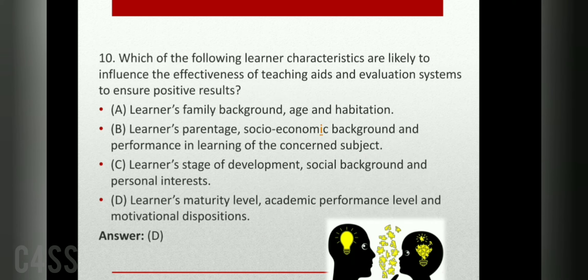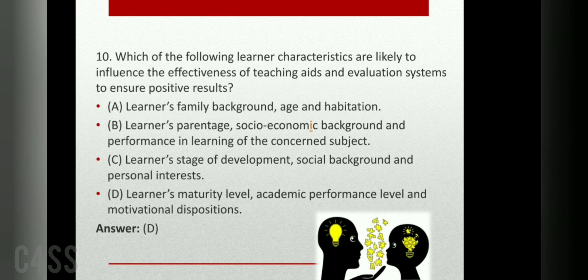The last question: which of the following learner characteristics are likely to influence the effectiveness of teaching aids and evaluation systems to ensure positive results? The answer is learner's maturity level, academic performance level, and motivational dispositions. All these factors influence the effectiveness of teaching aids and evaluation systems to ensure positive results in the teaching-learning process. Thank you for watching and please subscribe to our channel for more videos.